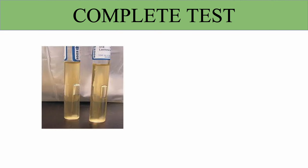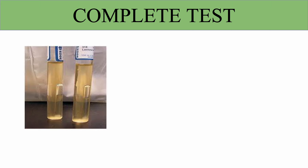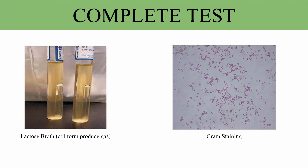If we get a positive result for both the presumptive and confirmed tests, we can proceed with the completed test. The completed test is performed using organisms that grew on the confirmed test media. These organisms are used to inoculate a nutrient agar slant and a tube of lactose broth. After 24 hours at 37 degrees Celsius, the lactose broth is checked for gas production, and a Gram stain is made from the organism on the nutrient agar slant. If the organism is a gram-negative, non-spore-forming rod and produces gas in the lactose tube, then it is confirmed that coliforms are present in the water sample.